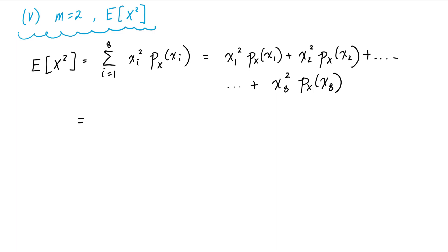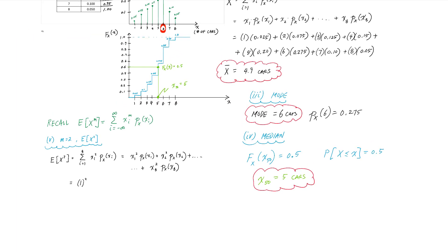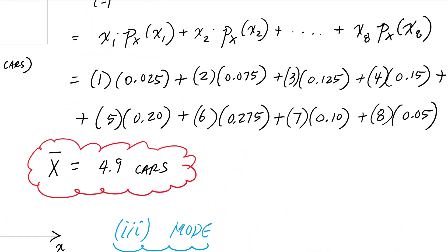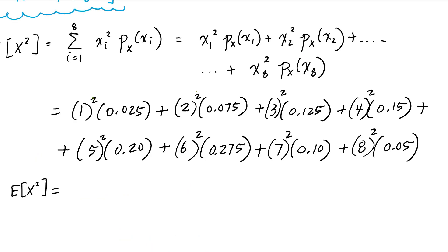And if I plug and chug some numbers here, all I'm doing is taking this work that I did and adding squares to the top, to each of the x values or the possible outcomes. And hopefully this comes out to 26.85, it's got some weird units, like cars squared.